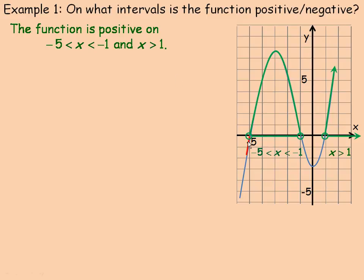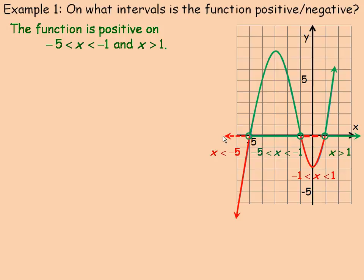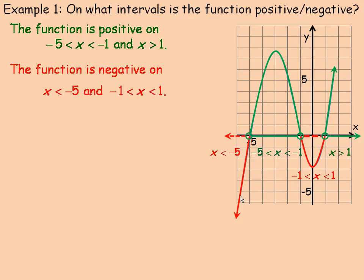The function is negative on two different intervals. One interval is everywhere to the left of negative five, so x is less than negative five. The other is between negative one and positive one. So the function is negative where x is less than negative five and between negative one and positive one. You're always answering in terms of an interval for x under which the function is either above or below the x-axis.